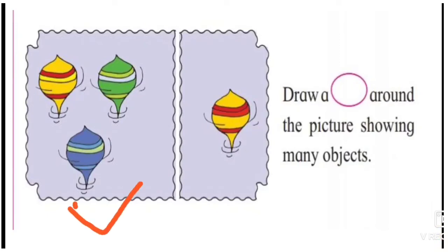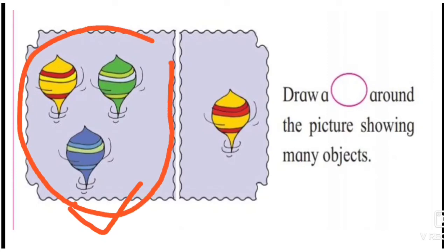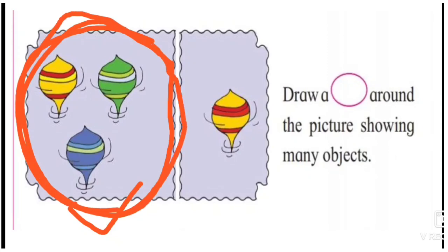Look at this picture. What is this? This is a top. Do you like to play with the top? Very good! What you have to do: draw a circle around the picture showing many objects. Which picture is showing many objects? This picture is showing many objects. We will circle this picture. Very good, very nice!